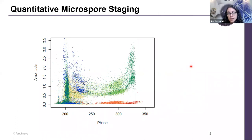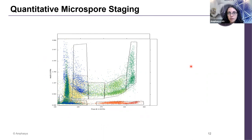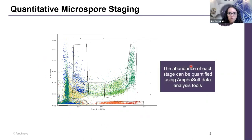Once you have this, you have essentially created a map of the pollen development. Once you have the map, what you can do is design polygon gates using one of the tools commonly used for data analysis in AmphoSoft, the software that runs our instrument, to delineate a certain area of the scatter plot where the population of points corresponding to a given stage is present, and thereby be able to quantify it.